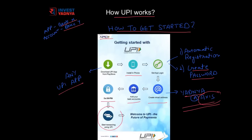Now, what happens and how is the process different if we use our own bank's app where we have an account? Actually, the process is simpler — two steps get reduced. First, your app login password: you can use your own MPIN as your app login password as well, so you don't have to remember two passwords. Second, you don't have to add your bank account as it will automatically get added based on your registered mobile number.